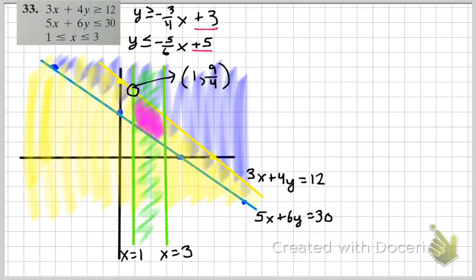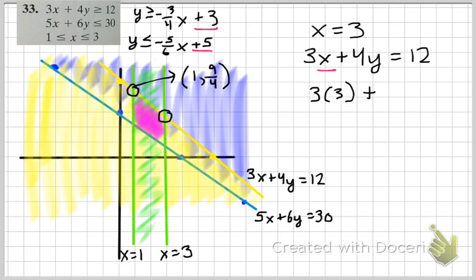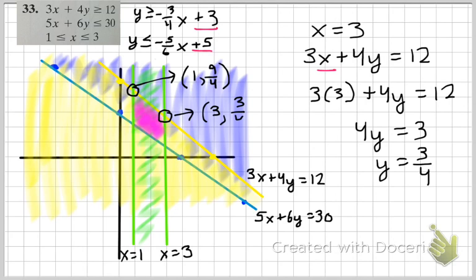Let's look at this next point. How about right here? Once again, I'm going to work with the two lines that make this intersection. So I have x equals 3. And 3x plus 4y equals 12. So this is my system of equations. I'm going to plug in my value for 3 to solve for y. So this point is 3, 3 quarters.